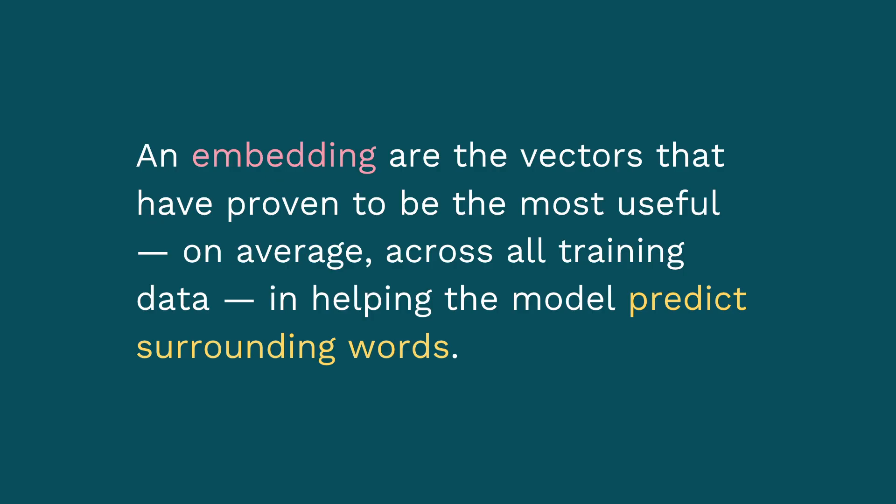I need to pause here, because even though we're talking about language, machines only understand numbers. That initial token embedding often doesn't really mean anything — it's just numbers. It's also not an average between the two meanings of a given word. More specifically, embeddings are just the vectors that have proven to be most useful, on average, across training data, in helping the model predict surrounding words. Embeddings don't store meaning — they map where those meanings sit in relation to one another.